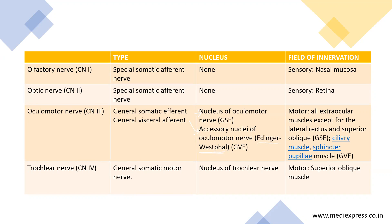The field of innervation is motor. The oculomotor nerve innervates all the extraocular muscles except for the lateral rectus and the superior oblique. It also innervates the ciliary muscles and the sphincter pupillae muscles.